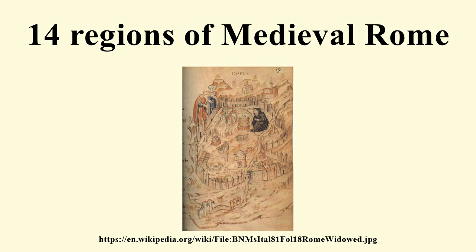Originally the city of Rome had been divided by Augustus into 14 regions in 7 BC. Then sometime during the 4th century, Christian authorities instituted seven ecclesiastical regions, which ran parallel to the civil regions. With the collapse of imperial authority in the Western Roman Empire, after the death of Julius Nepos in 480, much of the old imperial administrative structures began to fall into abeyance.